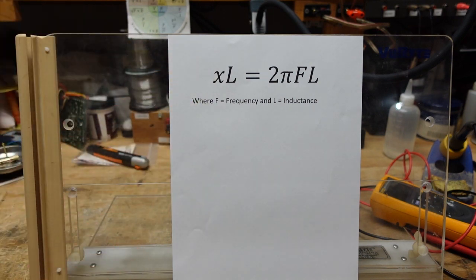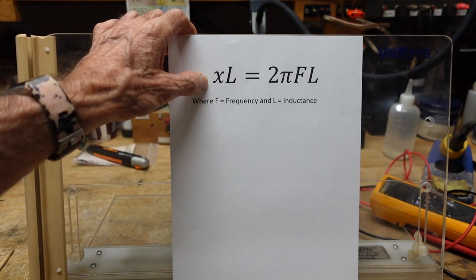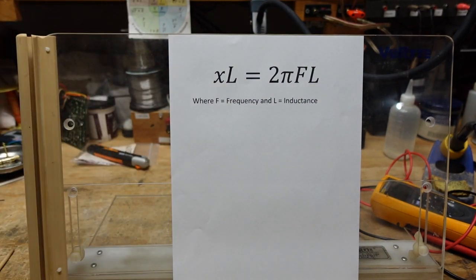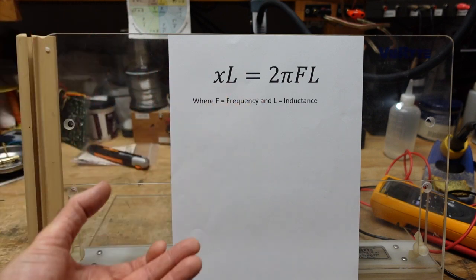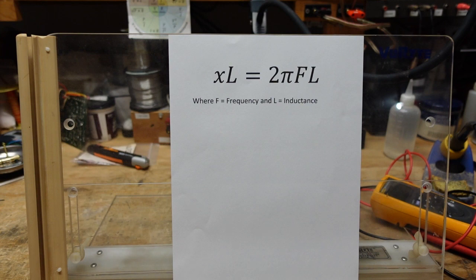DC resistance plus reactance equals impedance. When we measure the resistance of an 8-ohm speaker it is commonly less than 6 ohms — the difference is made up by the reactance. We know that impedance swings up and down quite a bit with frequency, and this is why the inductors in the crossover network and the voice coils of speakers and tweeters all have an effect. Ideal inductors would have no DC resistance — they'd be wound out of superconductors — but we don't live in an ideal world.